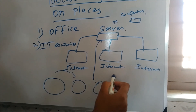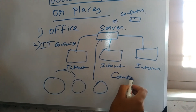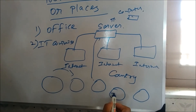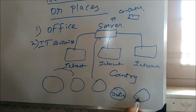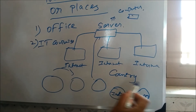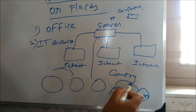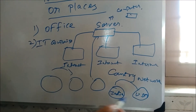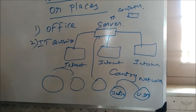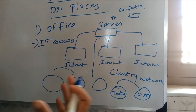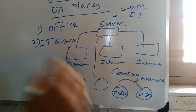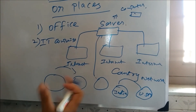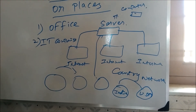Countries are connected. For example, India is also connected to the network — one country to country, a building, a state to state. The network is also connected across all of these.